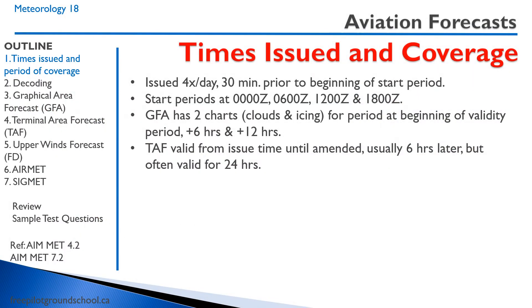Weather forecasts are issued four times per day, 30 minutes prior to the beginning of the start period. The start periods are midnight Zulu, 0600 Zulu, 1200 Zulu, and 1800 Zulu — meaning the forecasts are issued at 2330, 0530, 1130, and 1730.